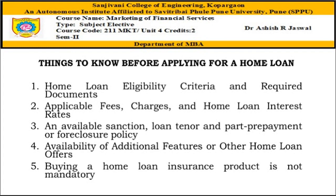The third consideration is the available sanctioned loan amount, tenor, and part-payment or foreclosure policy. Knowing the maximum sanction alongside the maximum tenor is crucial in decision making. Picking an option that offers an appropriate sanction ensures one doesn't have to make compromises. Additionally, one should look into the tenor, as this is directly linked to the monthly outflow. Having sufficient time to repay the large sum is key to avoiding default. Another factor to note is the home loan foreclosure and part-payment policy.